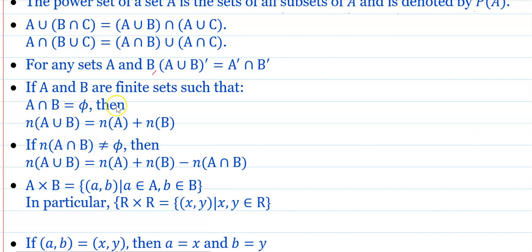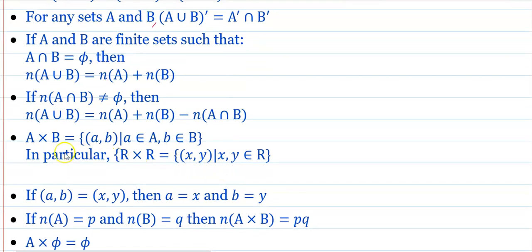If n(A intersection B) is not equal to phi, then n(A union B) equals n(A) plus n(B) minus n(A intersection B). Next, A cross B equals the set of ordered pairs (a, b) such that a belongs to A and b belongs to B.